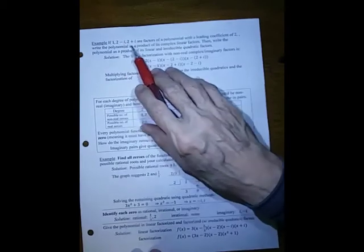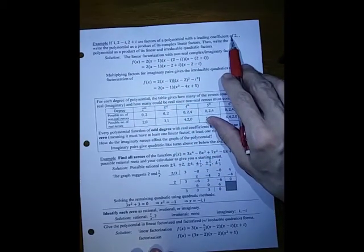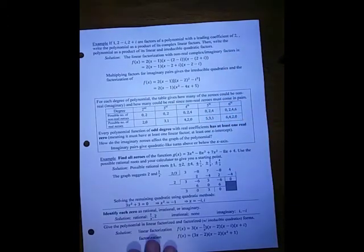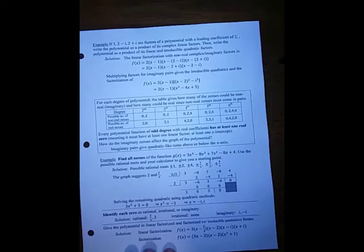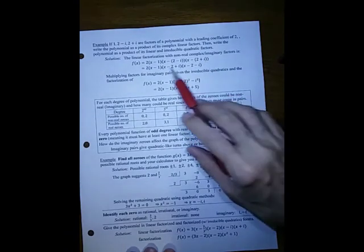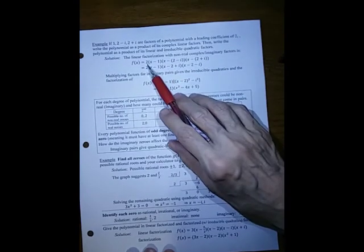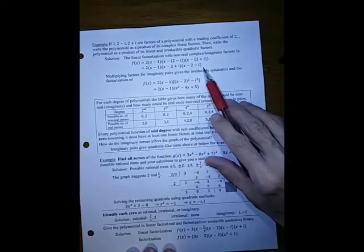If we have 1, 2 minus i and 2 plus i are factors of a polynomial with a leading coefficient of 2, write the polynomial as a product of its complex linear factors, then write the polynomial as a product of its linear and irreducible quadratic factors. So the linear factorization with non-real factors would be what? We would have to put the leading coefficient and then x minus each one of those zeros, which simplifies to this.